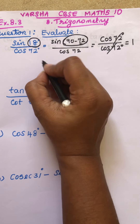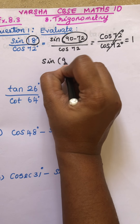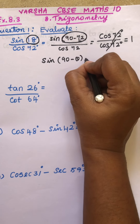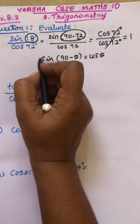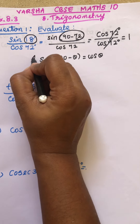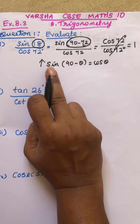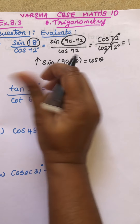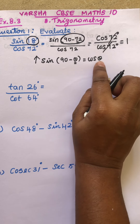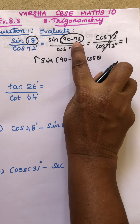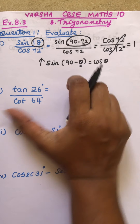The formula we used here is sin(90 minus θ) equals cos θ. Here θ is 72 degrees, so sin 18 becomes cos 72. Do you understand?